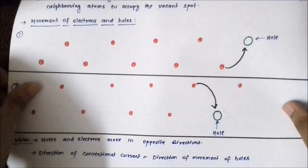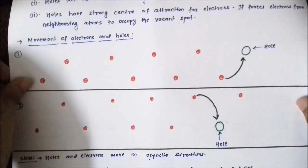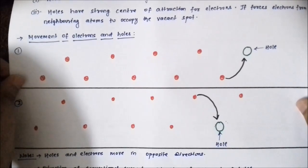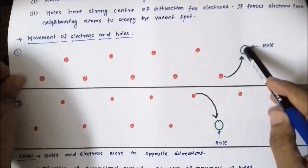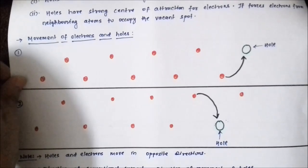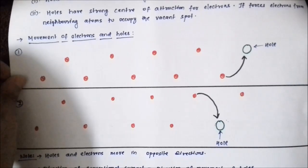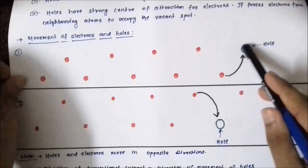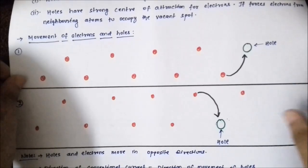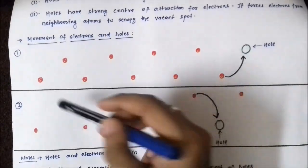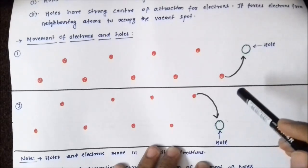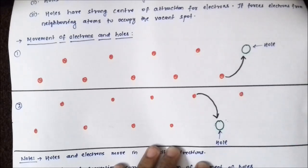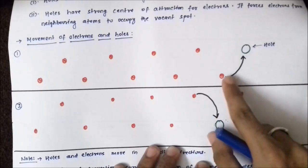Now let us understand the movement of electrons and holes. One important thing to understand, as I mentioned in the previous video on the working of PNP BJT, is that holes never move. It is the electrons which always move and occupy the vacant spot, giving us the impression that the hole is moving. It is actually the location of the vacant electronic spot which is changing. Let us say electrons are arranged in a certain fashion — the red dots are electrons — and we have a hole, a vacant spot, which has a strong force of attraction towards neighboring electrons.